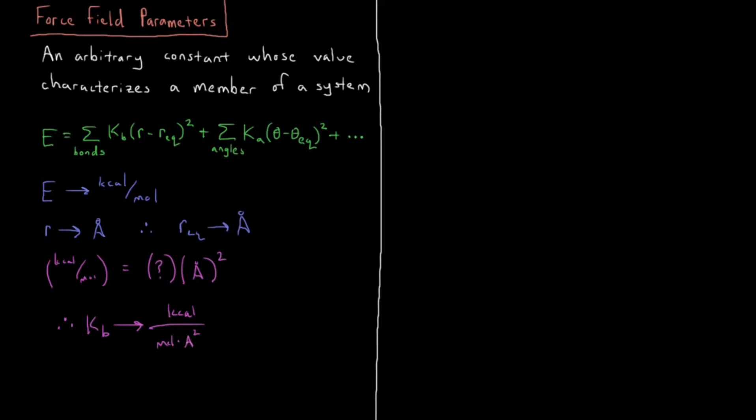What's an example of some typical values that you see for these types of parameters? The OH bond in H2O in AMBER, which is the force field that we're going to be using pretty typically throughout this chapter. For AMBER, we have the equilibrium OH bond distance in water equal to 0.960 angstroms, and Kb equal to 553.0 kcal per mole.